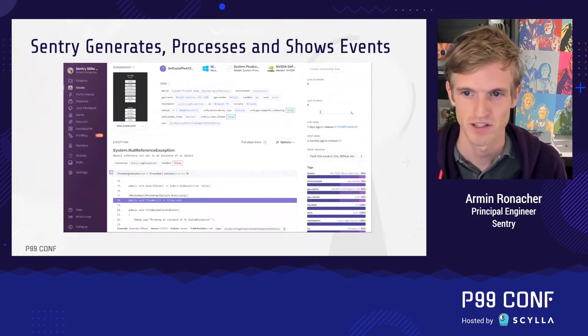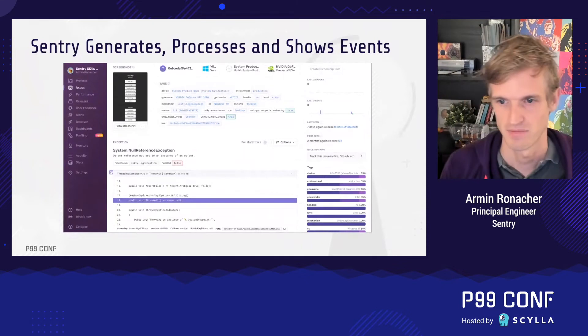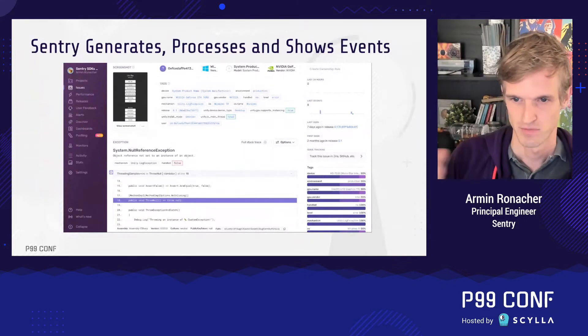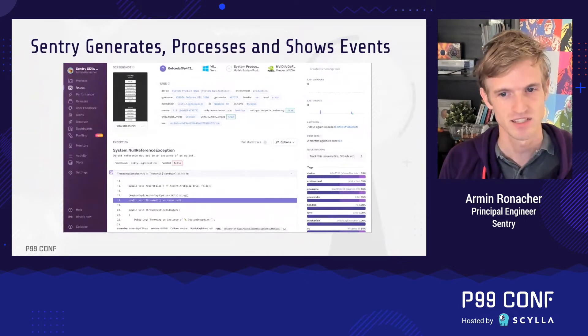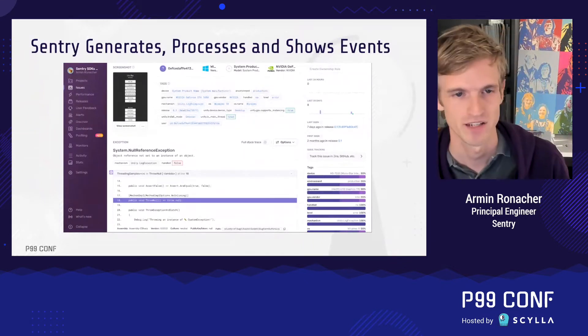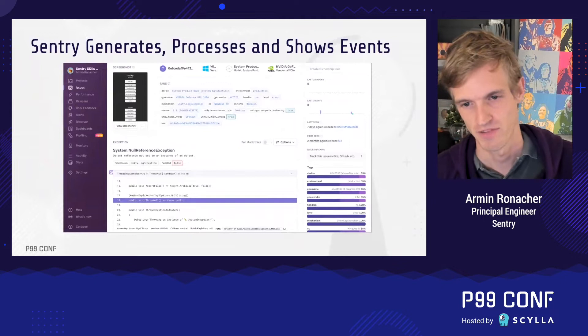You can also see on this event the list of tags at the top — data that we aggregate in a column store — as well as an example screenshot that can be sent along as an attachment. So this is roughly what the kind of data looks like going in, and what the challenges are with it.